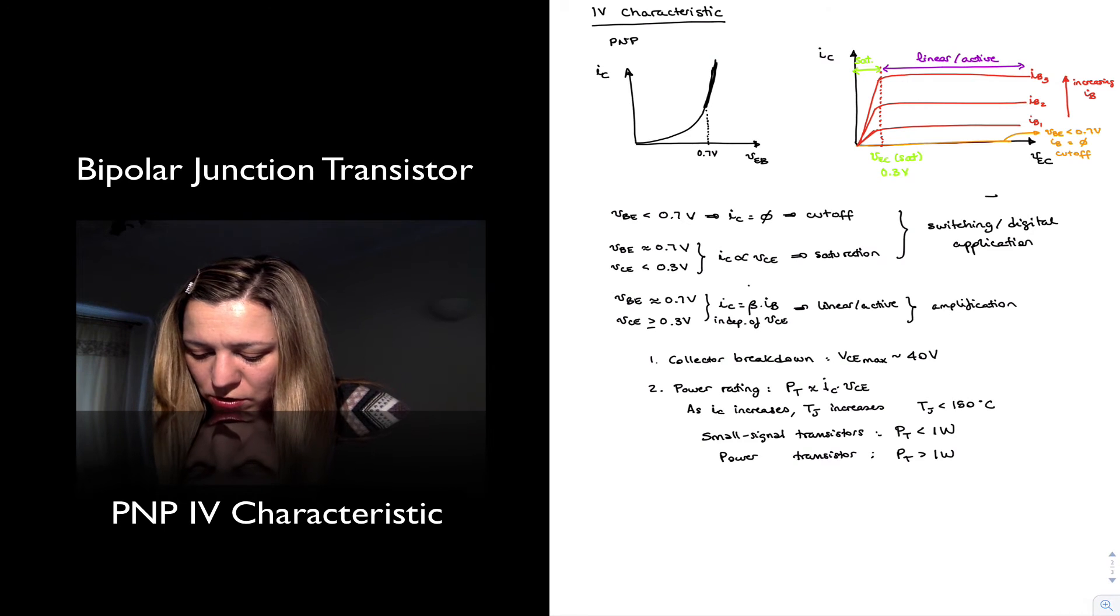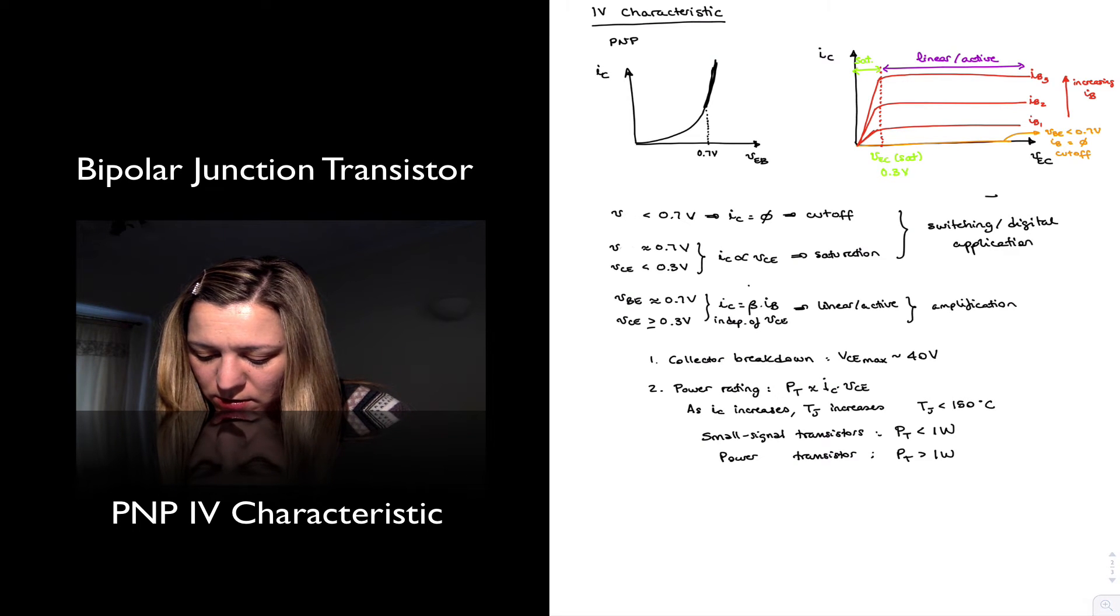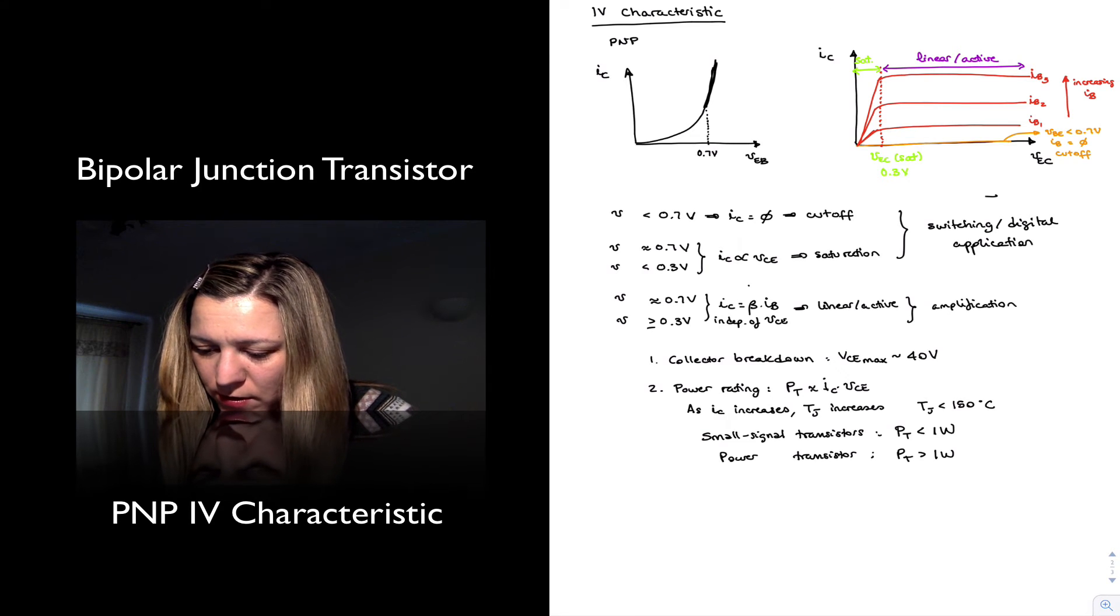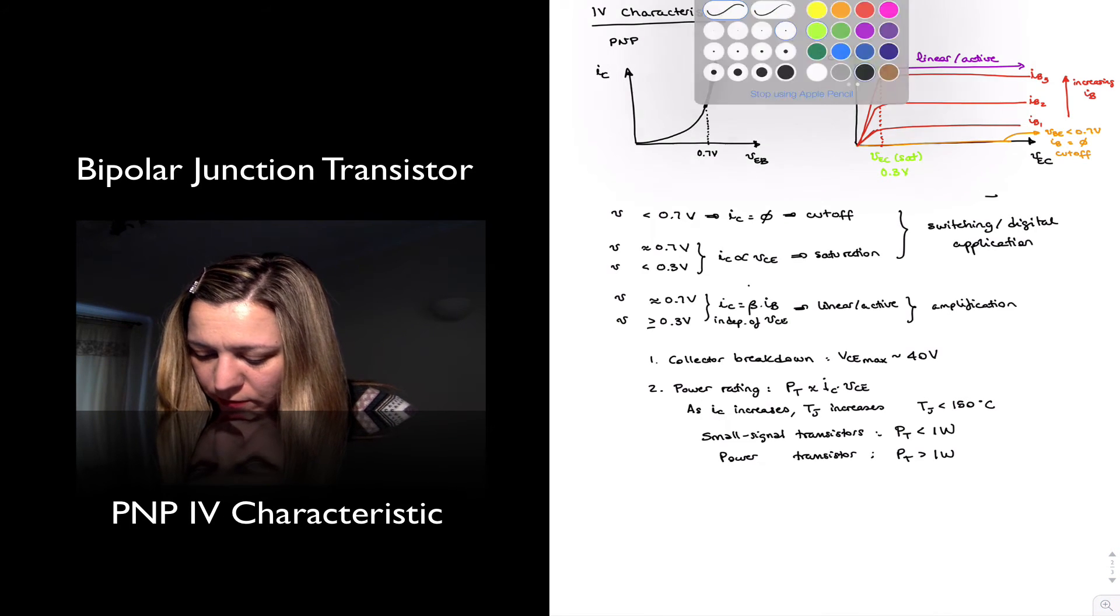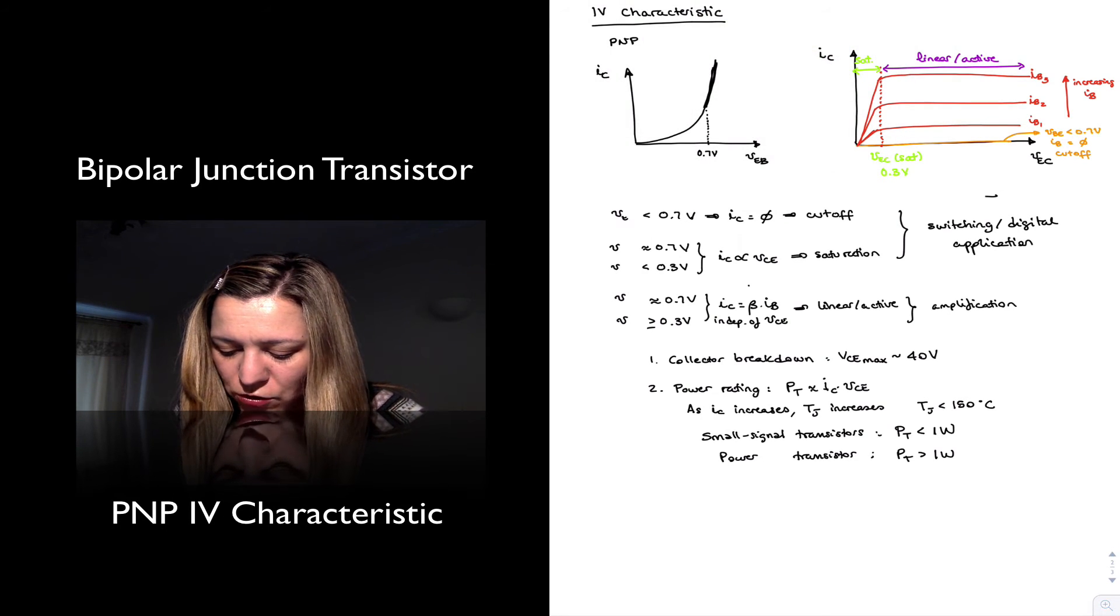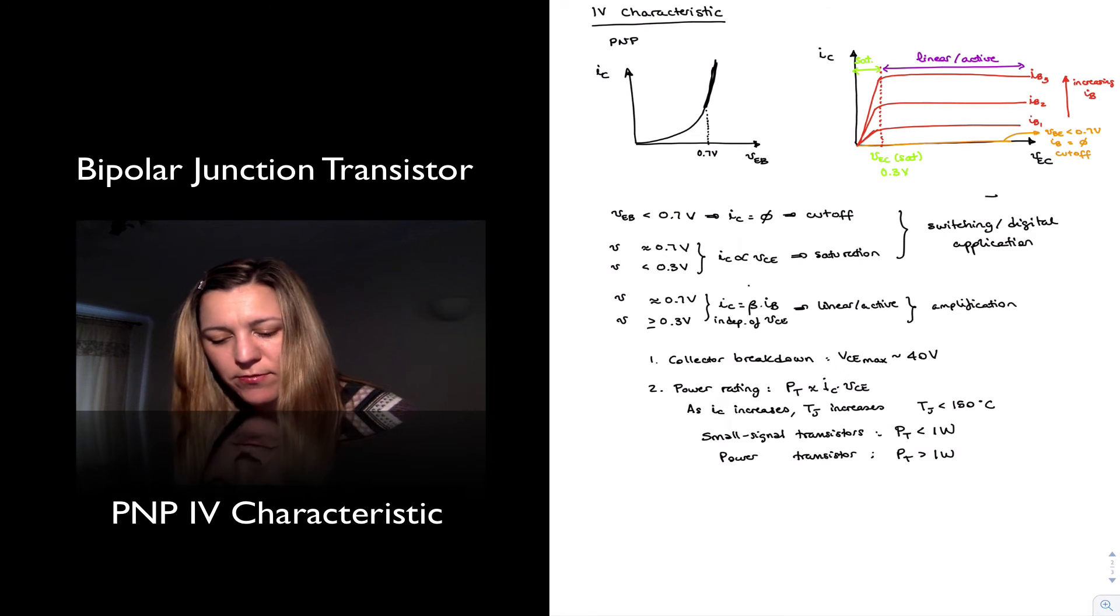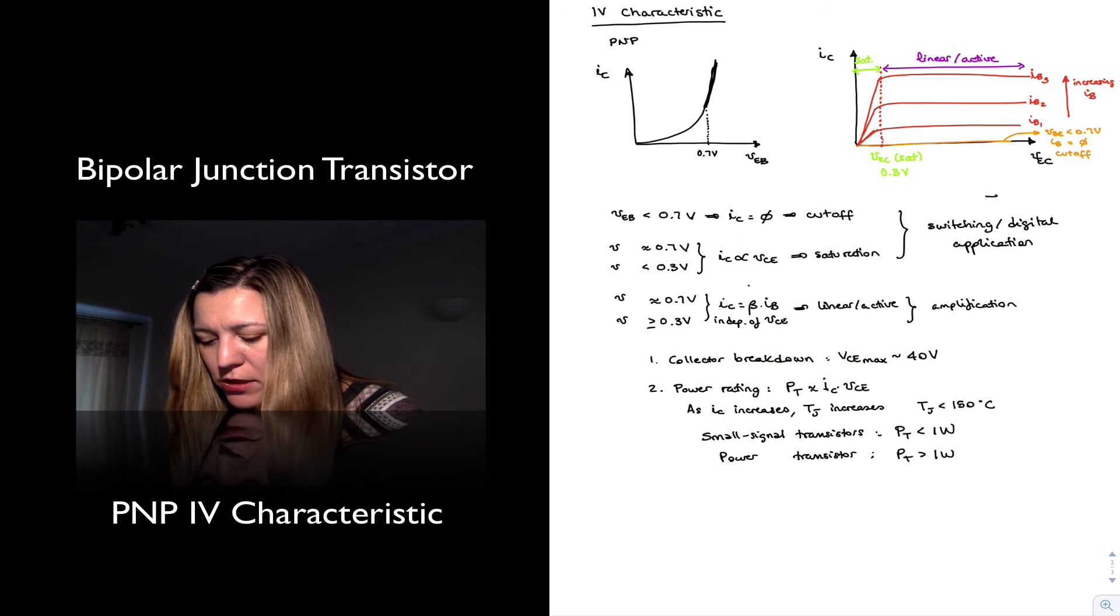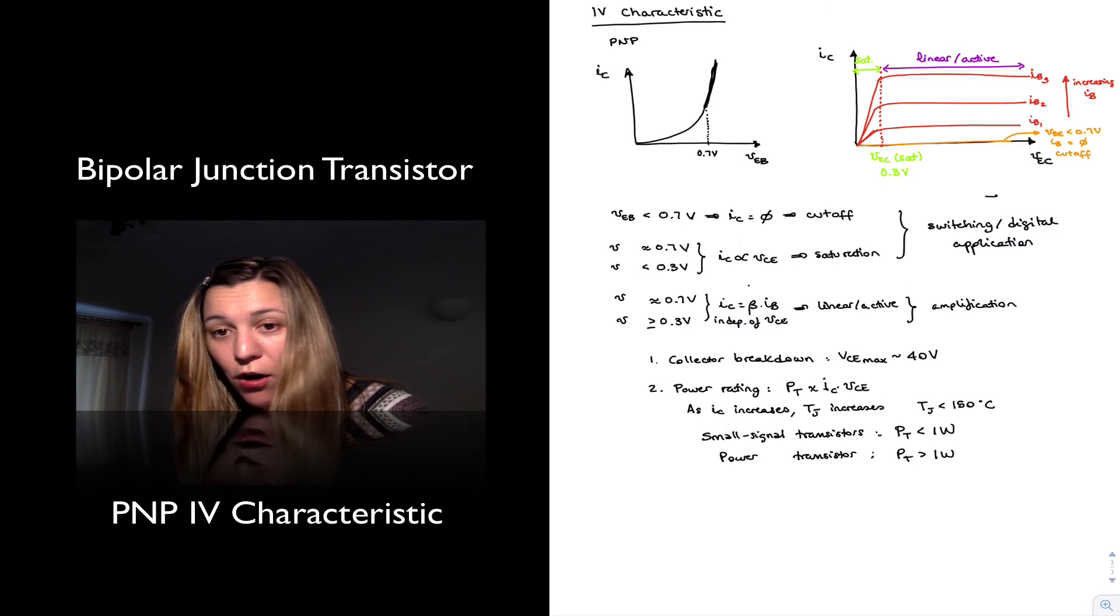Saturation. And again, you're just changing the polarities of those voltages. So, in the case of cutoff, you need to make sure that your VEB voltage is less than 0.7 volts, so that that emitter-base junction is off, or is not forward biased.